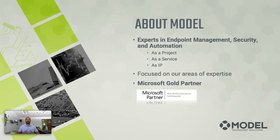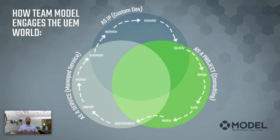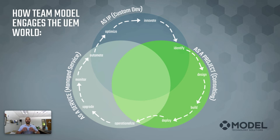Model Technology Solutions is based in St. Louis, Missouri. We're a Microsoft Gold partner. We have three divisions: a consulting division, or project division, to identify, design, build, and deploy technology; a service division, or managed services division, to operationalize, upgrade, monitor, and automate technology; and an IP division, which is custom development to continue the automation, optimize, and innovate technology. All of this is really structured around Unified Endpoint Management or devices.